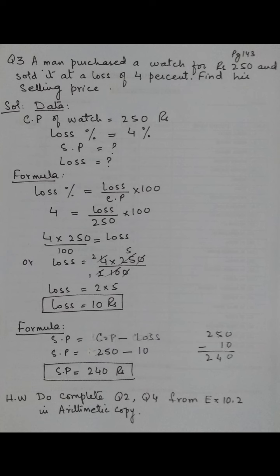5 times 5 is 25, 5 times 10, 2 times 2 is 4. So the loss is 10 rupees.